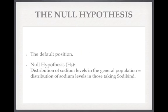And that brings us to the null hypothesis. This is a hypothesis which generally takes the default position — the status quo. In our case, the null hypothesis, often abbreviated as H₀, would be that the distribution of sodium levels in the general healthy population is the same as the distribution of sodium levels in those taking Sodibind. What we have to do now is find out what our friend's sodium level is and see whether it looks like it's reasonable that it comes from the distribution of the general population.